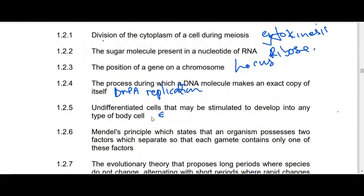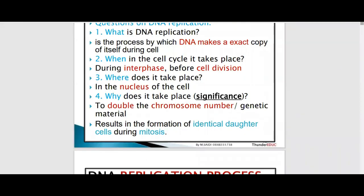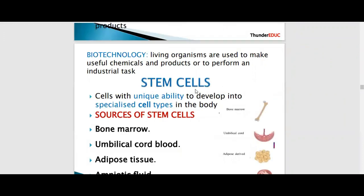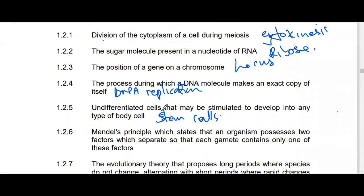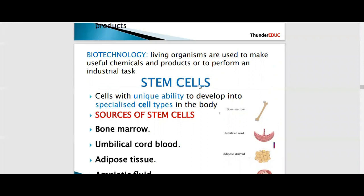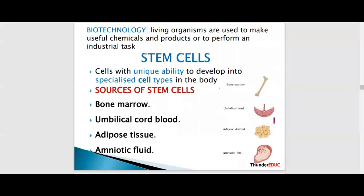Undifferentiated cells that may be stimulated to develop into any body cell — we call these stem cells. In our book under genetic engineering: 'stem cells are cells with the unique ability to develop into specialized cell types in the body.' The question describes cells that can develop into specialized cell types — that is stem cells.